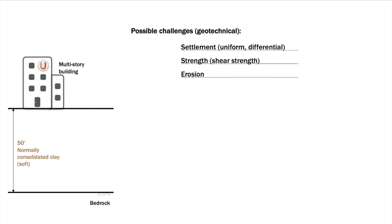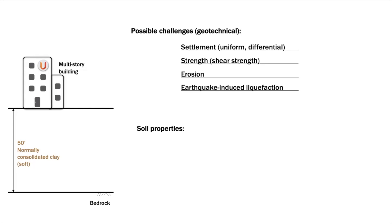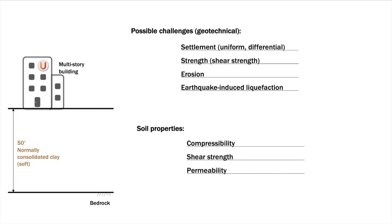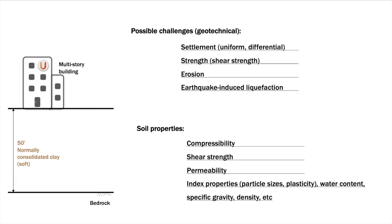Erosion relates to the adverse effect of groundwater flowing through soil. And in certain earthquake-prone regions, liquefaction may be a big problem — this is a more advanced topic and will be covered in graduate-level courses. Given these possible challenges in geotechnical engineering, we are interested in the following properties of soil: compressibility, shear strength, permeability, index properties such as particle sizes and plasticity, water content, specific gravity, density, and so on. All these properties will be covered in this course.